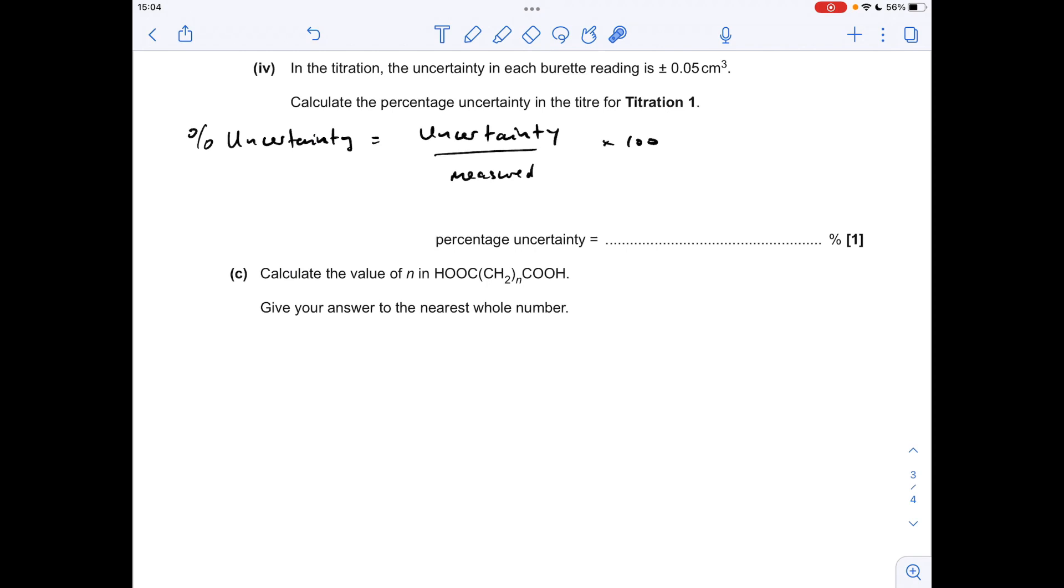Next part, we've got to calculate the percentage uncertainty in the titer for titration one, remember that had a value of 18.05 centimetres cubed. The thing to bear in mind here is the uncertainty is present in each burette reading, so there was an initial burette reading and a final burette reading. The titer is obviously the difference between those, so the uncertainty, this plus or minus 0.05 cm cubed, needs to be doubled, and we're going to divide that by the measured value, so the 18.05, and multiply it by 100 to turn it into a percentage, which gives an answer of 0.55%. So don't forget about that doubling, because the titer is based on two burette readings.